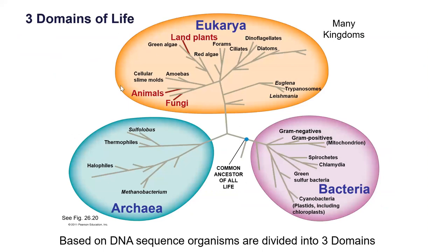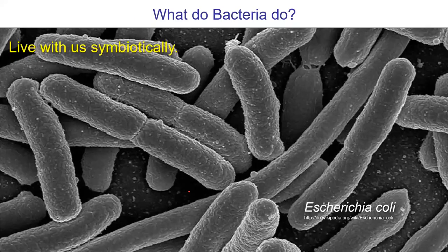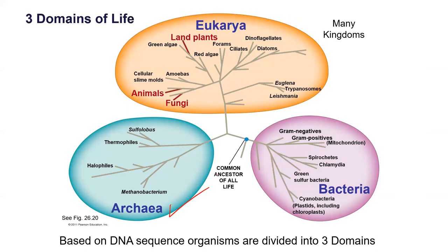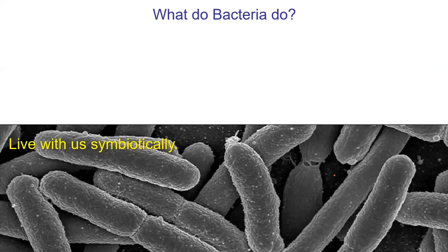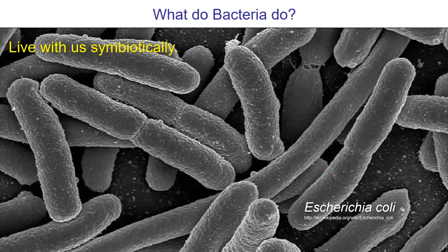So back to prokaryotes. On the last day, we left off comparing eukaryotes and prokaryotes, and we talked a little bit about the archaea. Today we want to talk about the bacteria. Bacteria are the most abundant of the prokaryotes compared to the archaea. We know way more about them in terms of their biology because they're easy to grow, and we have a huge interest in bacteria because many of them do make us ill.